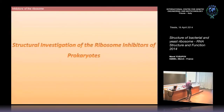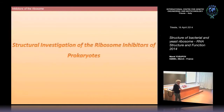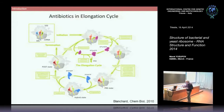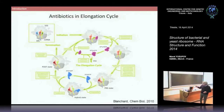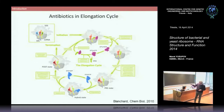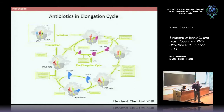We have two systems — a bacterial system and a yeast eukaryotic system. In the bacterial case we study how antibiotics work — how a small molecule can completely inhibit the entire system. Looking at the elongation cycle: the tRNA binding cycle, G-factor translocation step — in every step there is one or several inhibitors that can completely block ribosome function and protein production in the cell.